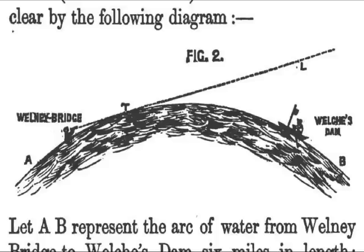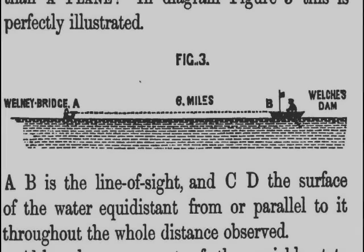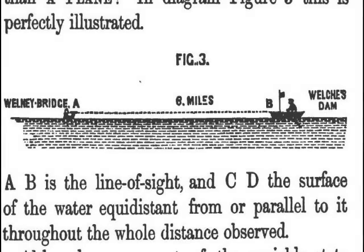From this experiment, it follows that the surface of standing water is not convex, and therefore that the earth is not a globe. On the contrary, this simple experiment is all sufficient to prove that the surface of the water is parallel to the line of sight, and is therefore horizontal, and that the earth cannot be other than a plane. In diagram figure 3, this is perfectly illustrated: A.B. is the line of sight, and C.D. the surface of the water, equidistant from or parallel to it throughout the whole distance observed.